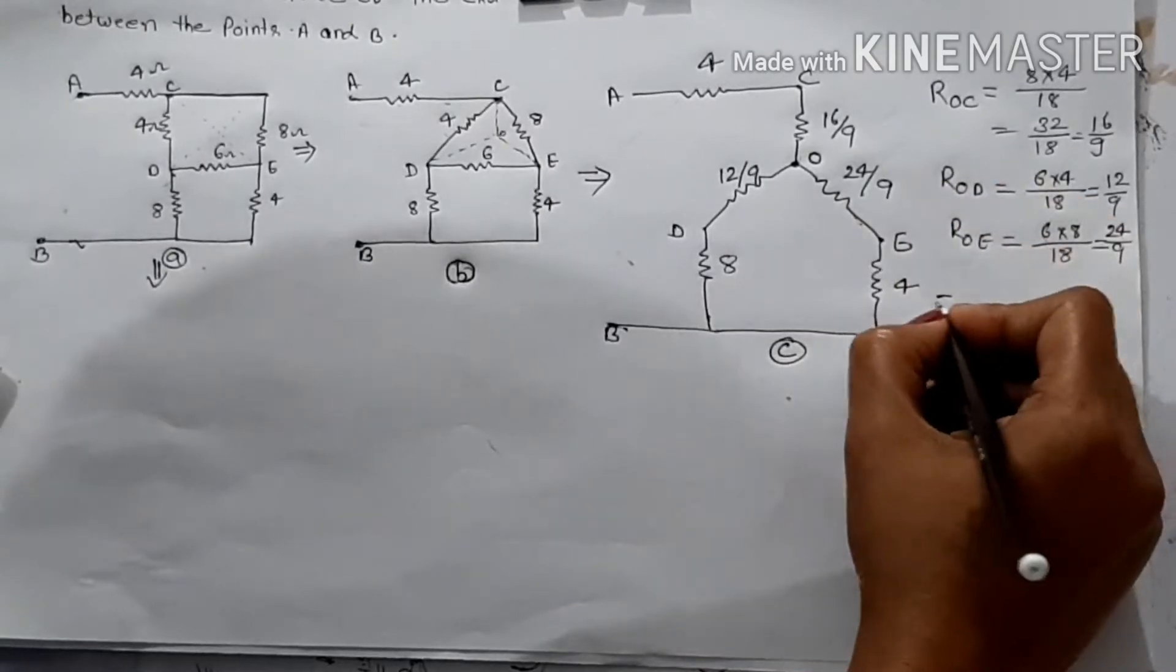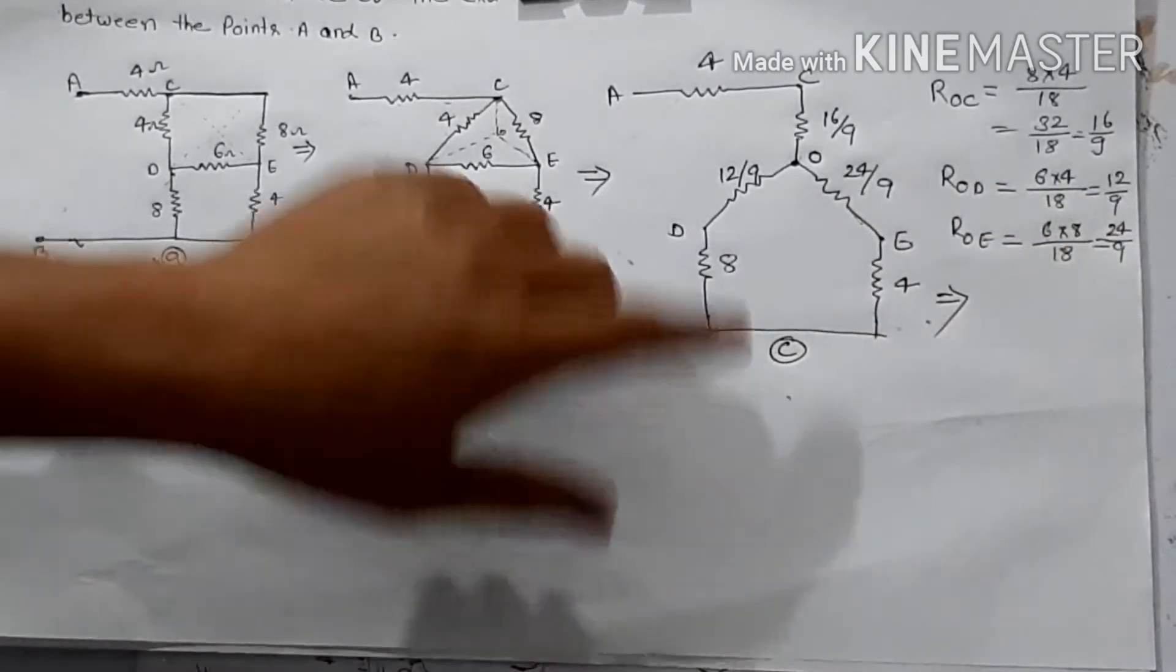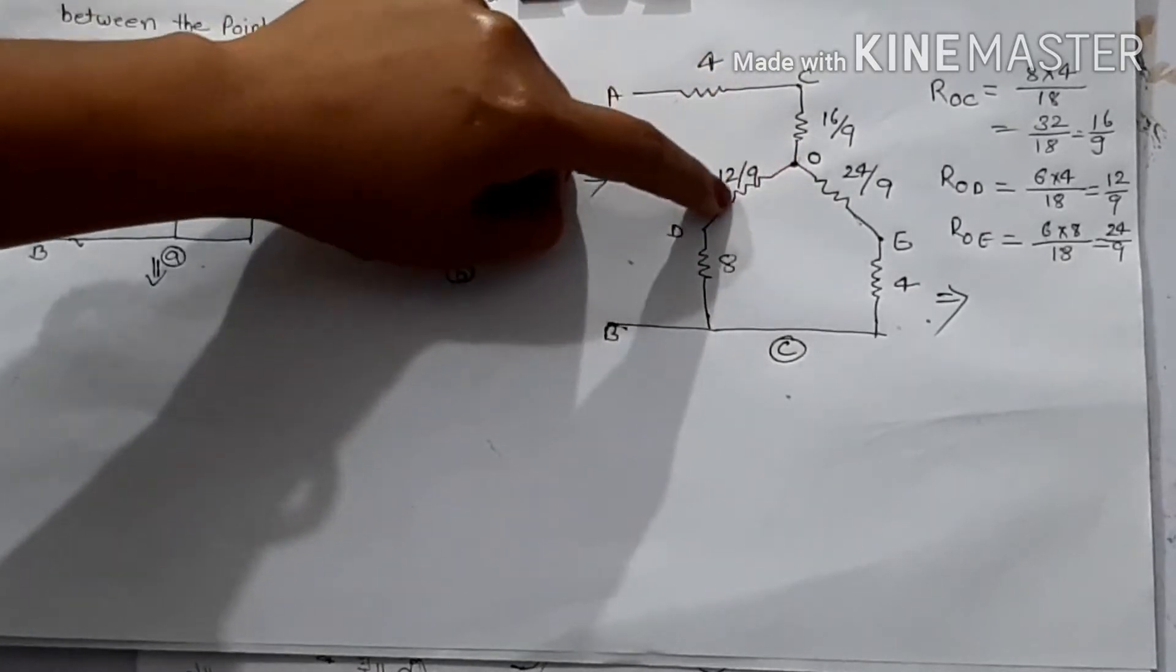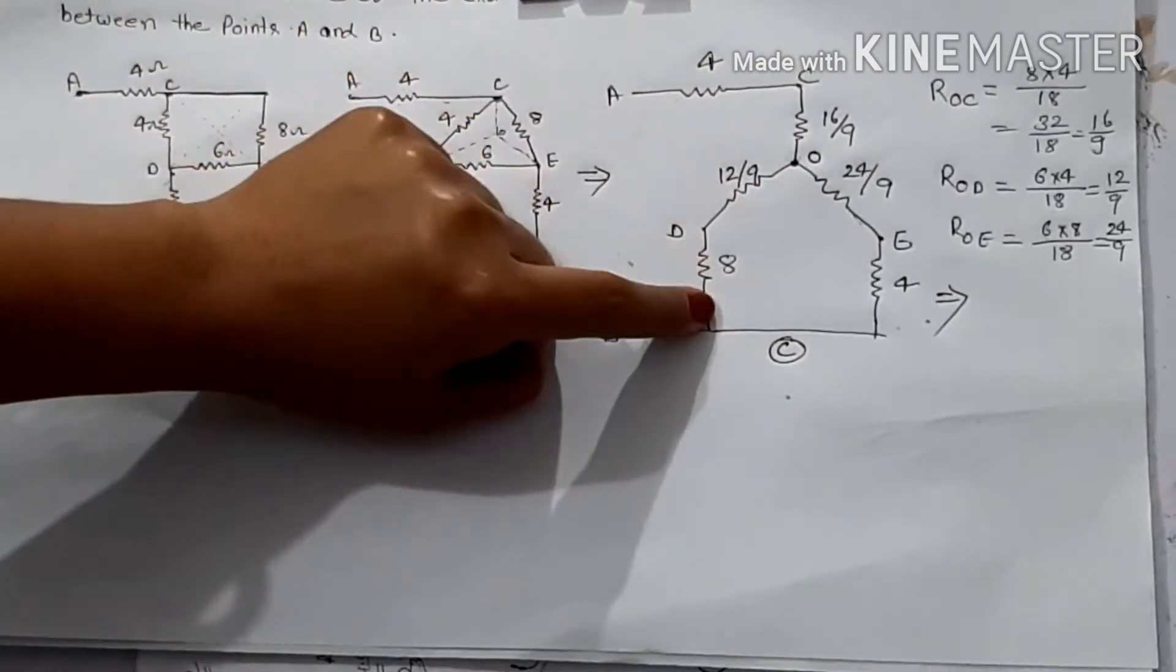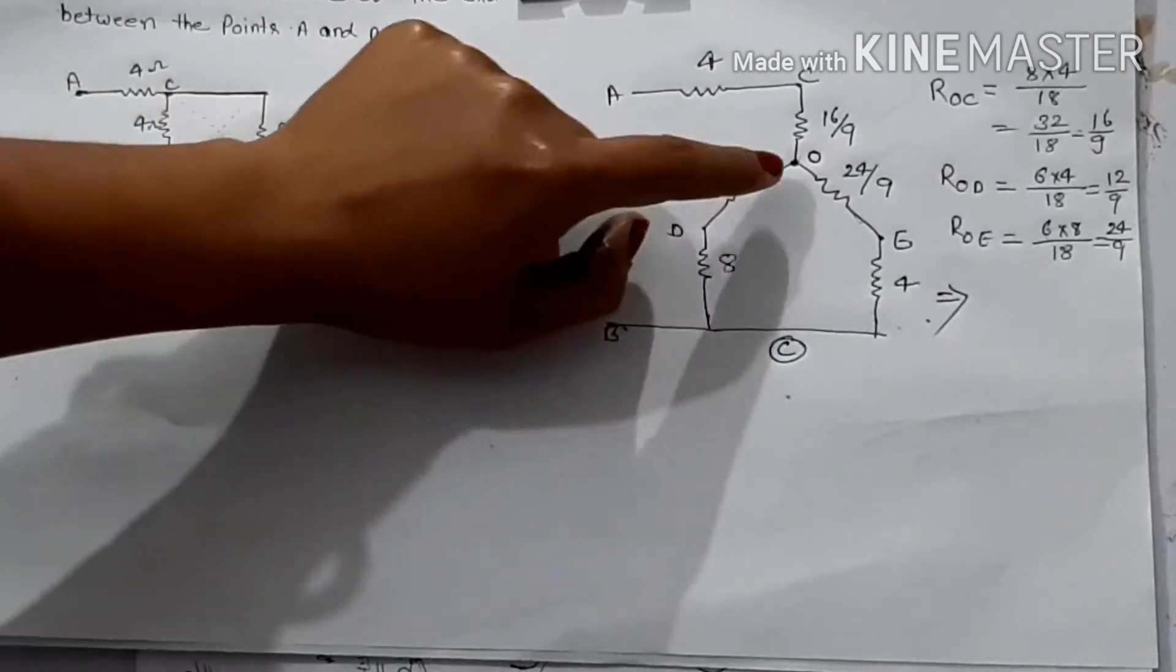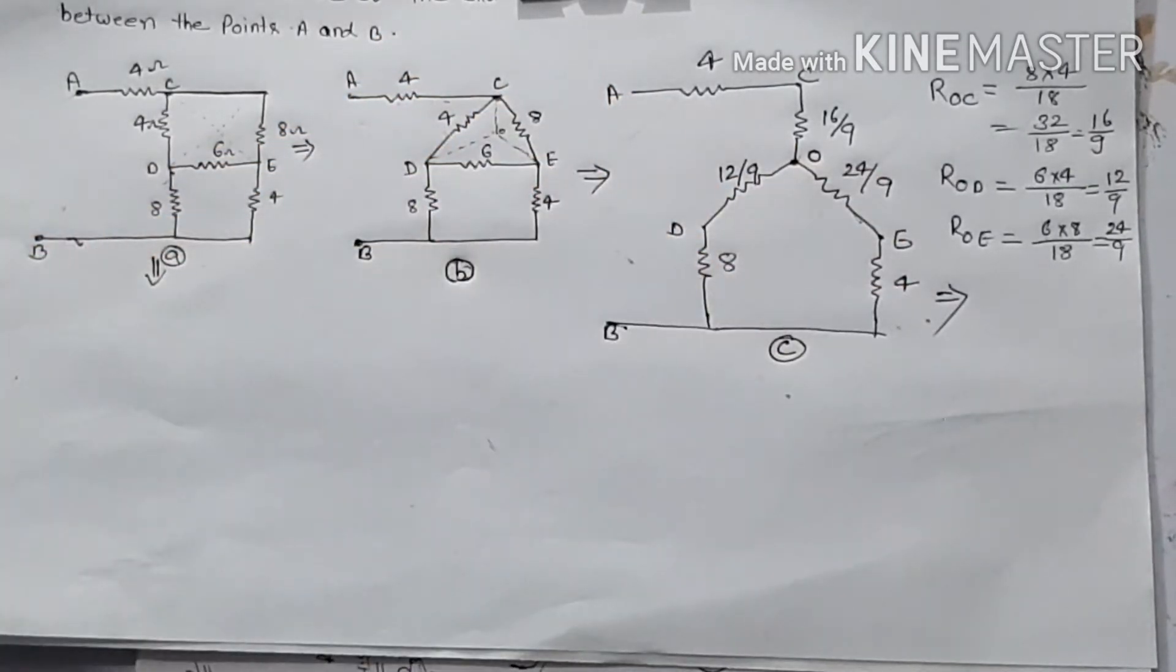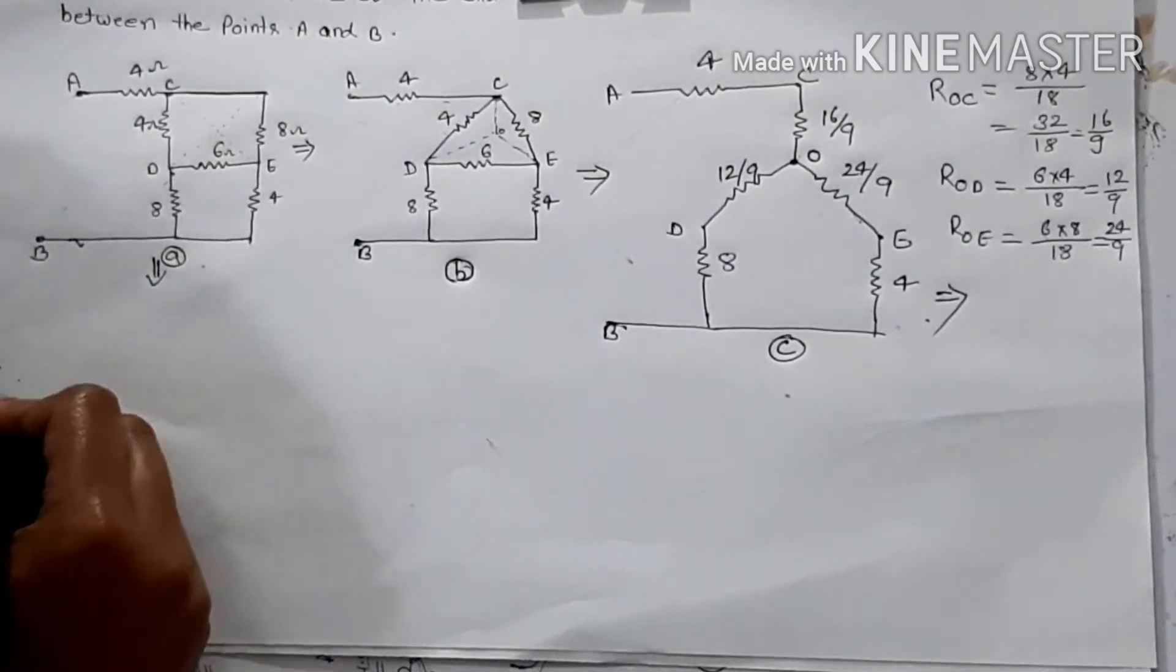So consider it. Then what we will do here? We will see this point O. If we go to O point, we will see the resistance in series connected. And if we go to the other side, we will see the resistance in series. So we will draw the figure again.